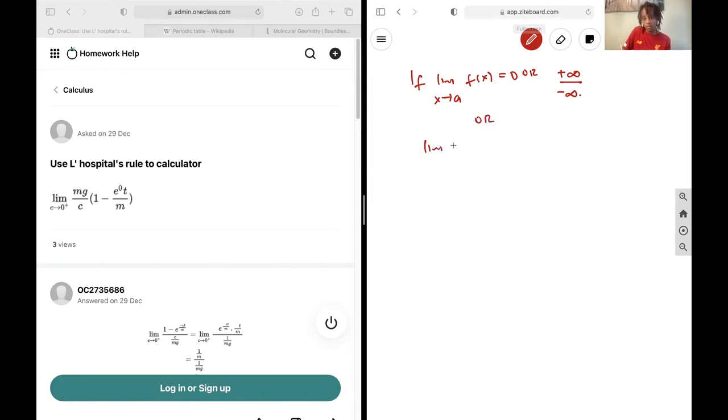or the limit of g(x) as x approaches a is equal to zero or again the same case, positive infinity over negative infinity, what that is going to mean